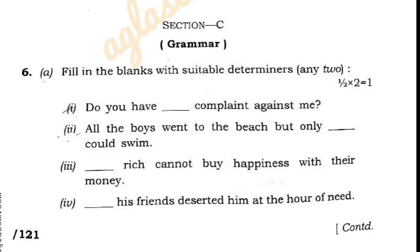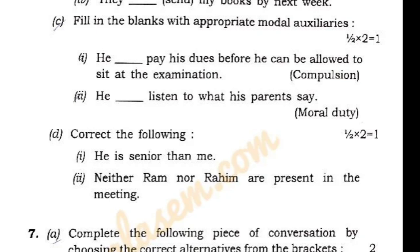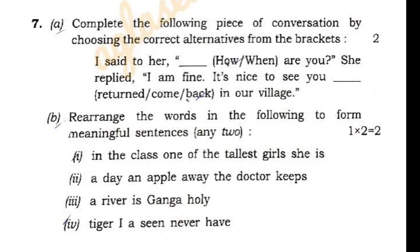In the grammar section: determiners — half into 2. For the correct tense, there are 1 to 2 options. The next topic is appropriate modal auxiliaries — half into 2. For error correction — half into 2. Complete the following piece of conversation and choose the correct alternatives from the brackets.